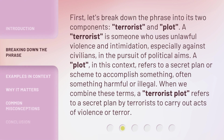First, let's break down the phrase into its two components: terrorist and plot. A terrorist is someone who uses unlawful violence and intimidation, especially against civilians, in the pursuit of political aims. A plot, in this context, refers to a secret plan or scheme to accomplish something, often something harmful or illegal. When we combine these terms, a terrorist plot refers to a secret plan by terrorists to carry out acts of violence or terror.